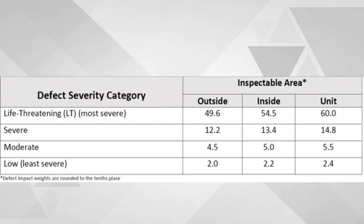First we want to get the total defect points. In order to do that we would multiply how many deficiencies of each designation and then add them together. For example, if we have three units that have LTs — life-threatening issues — we would take 3 times 60, which would give us 180 points.